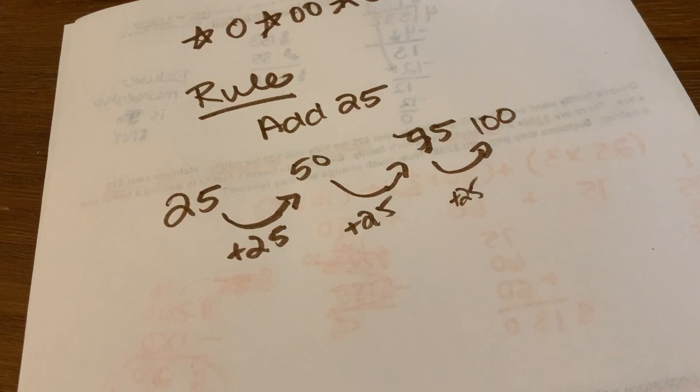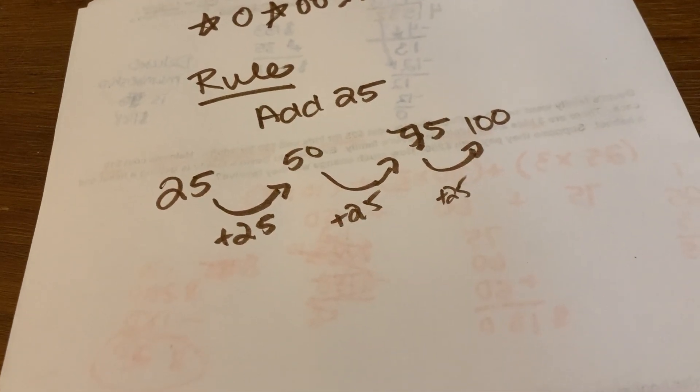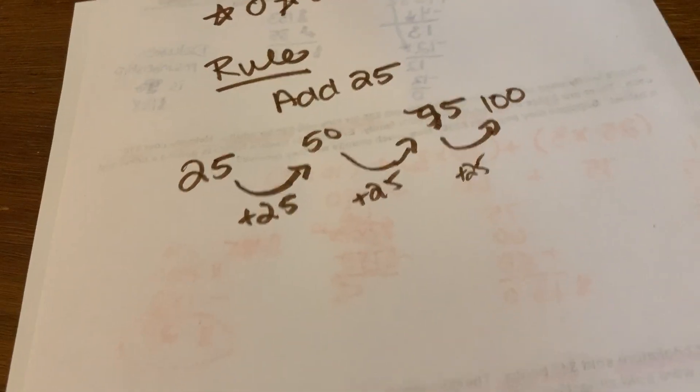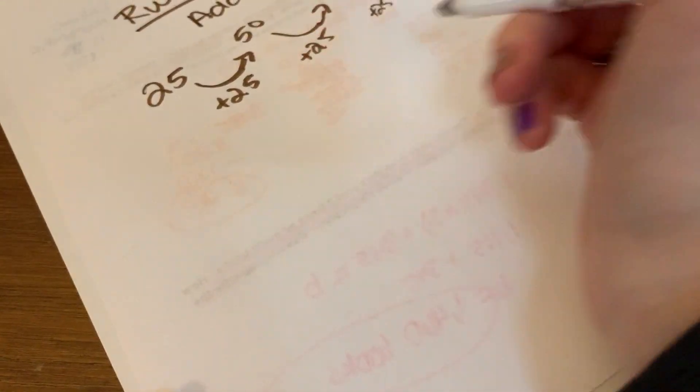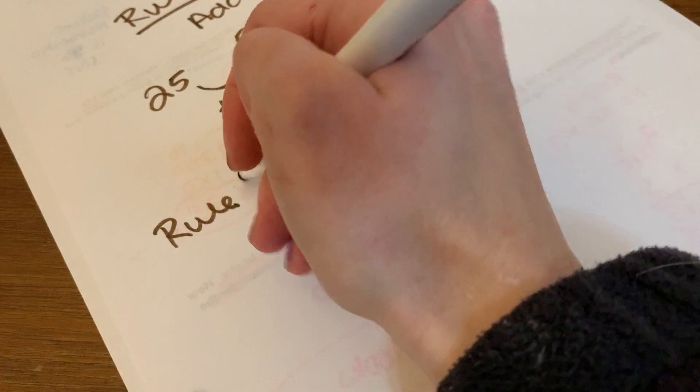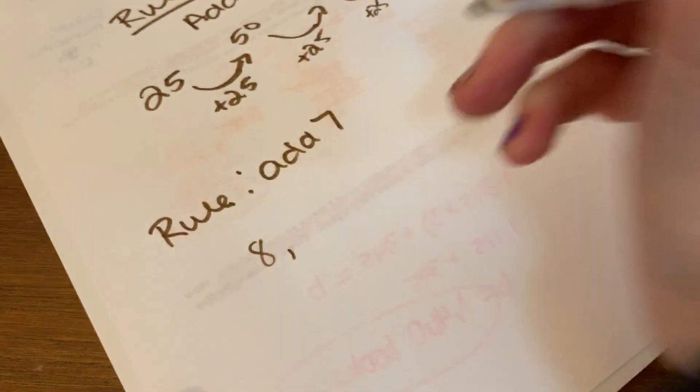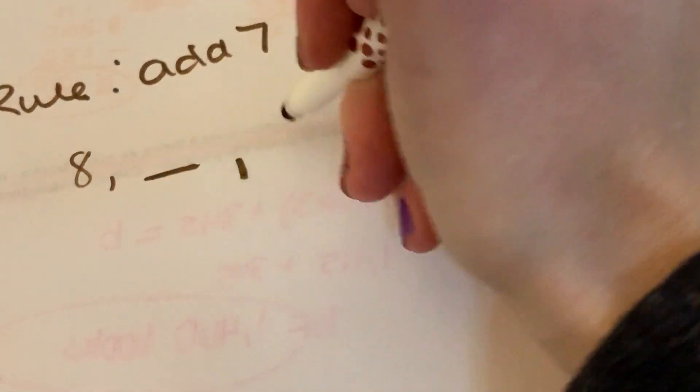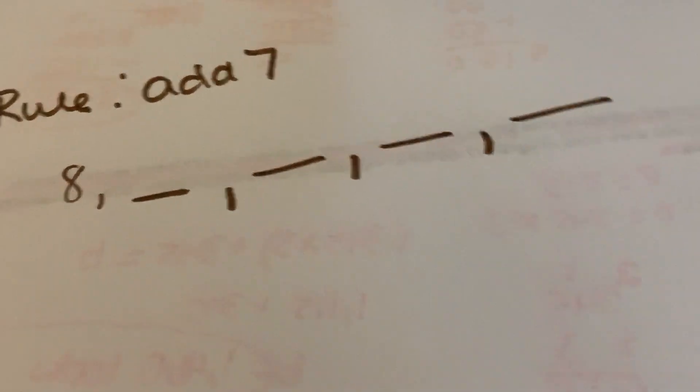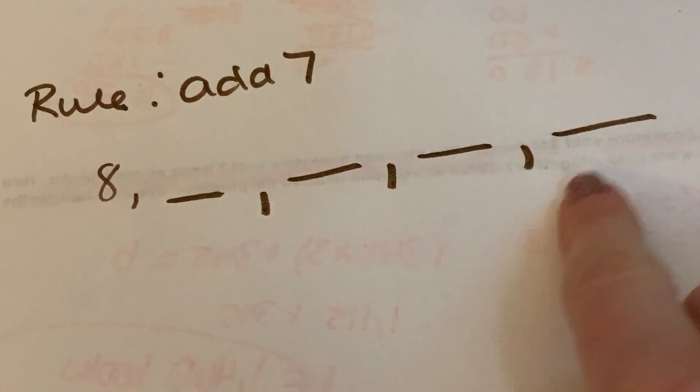So sequences have rules that are meant to be followed. So I'm going to show you one, and I want you to figure it out. So here is your rule. Your rule is to add 7, and your starting point is 8. Go ahead and continue it on for the next four terms. Terms mean the numbers.